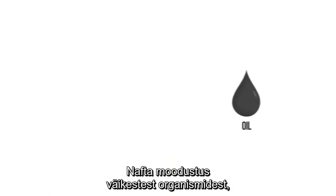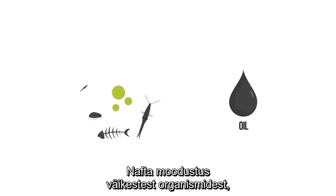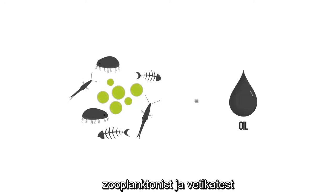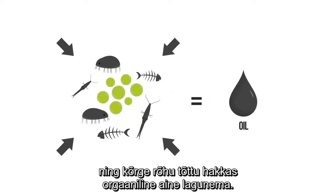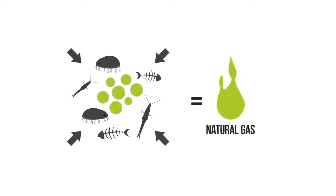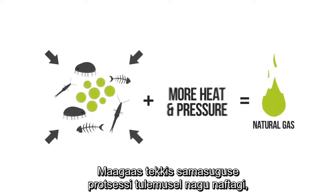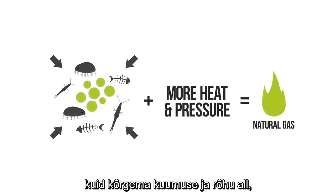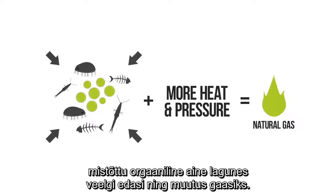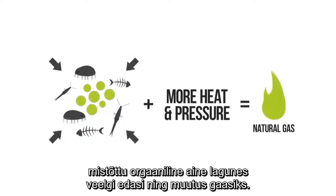Oil was formed from small organisms, like zooplankton and algae, where pressure caused the more complex organic matter to decompose. Natural gas was formed by the same process as oil, only it was exposed to more heat and pressure, causing it to further decompose and turn into a gaseous form.